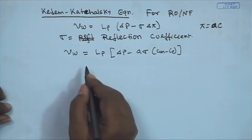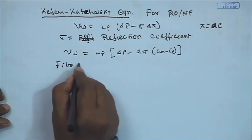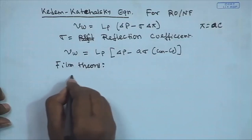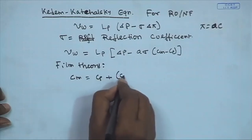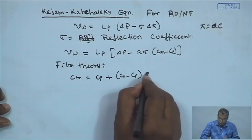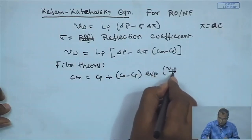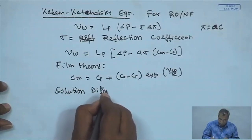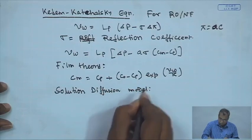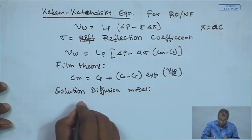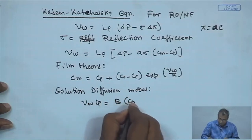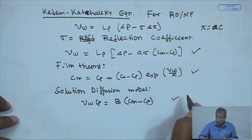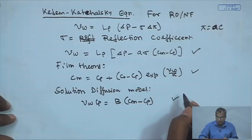So σ is the reflection coefficient. We will be using the film theory model: C_m = C_p + (C_naught − C_p) × exp(V_w / k). We also have the solution diffusion model: V_w × C_p = B × (C_m − C_p). So we have three unknowns — V_w, C_m, and C_p — and three independent equations involving these three parameters. This is a three-equations, three-unknowns system, which is highly solvable.